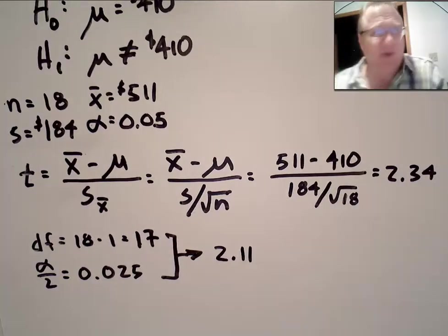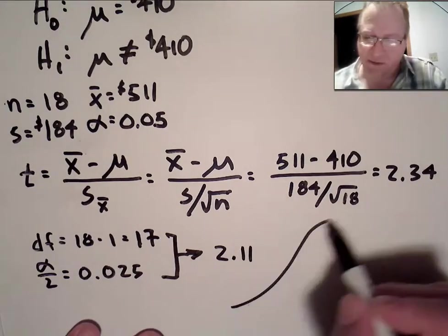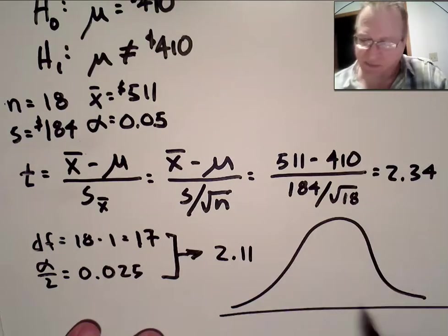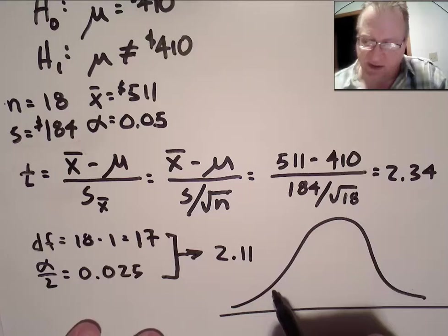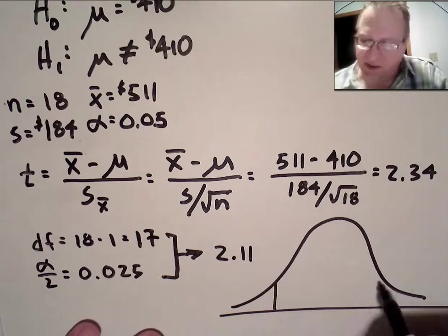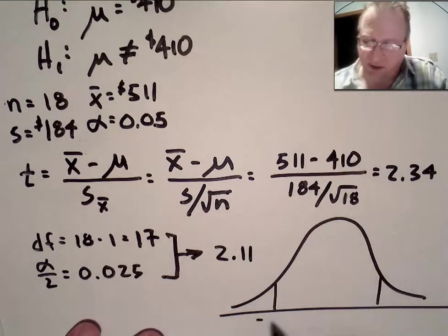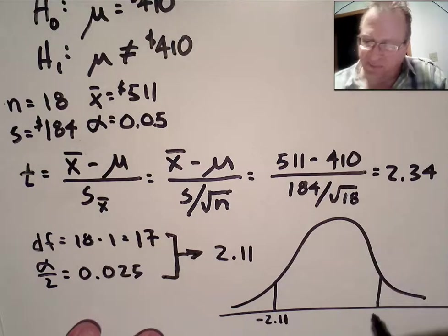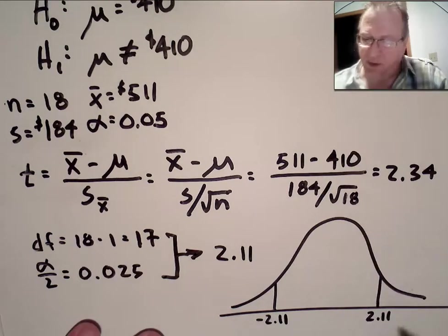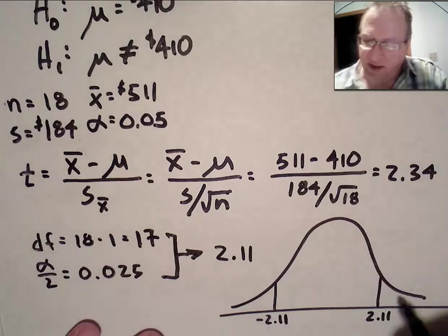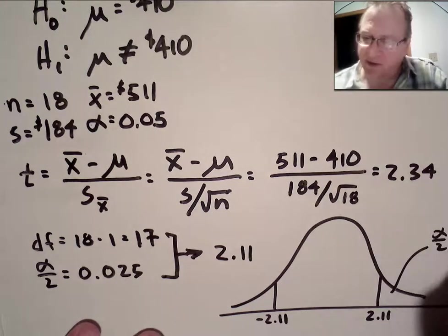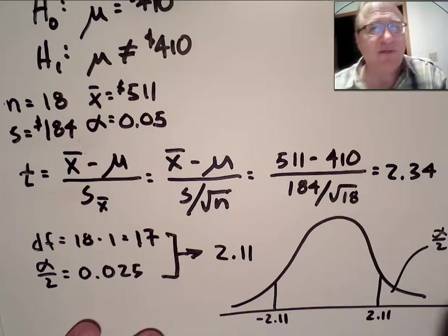And now, I can draw a chart of what we're talking about. I can't believe it's all going to fit on here. Let's see. So, we know the distribution is symmetric. So, we can say that's 2.11. And there's 2.11. And again, this is alpha over 2, 0.025. I bet that fell off the paper. Yep.